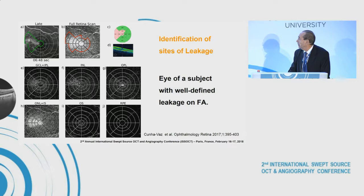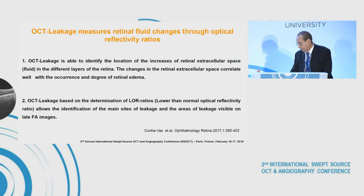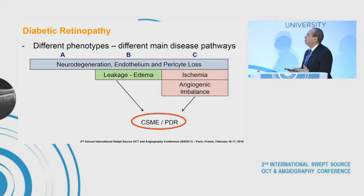OCT leakage therefore measures increases in retinal extracellular space in the different layers of the retina. It can quantify the amount of fluid and compare well with good specificity and very good sensitivity with fluorescein angiography. We always felt that, as Professor Ramin Tadayoni showed, there is some degree of neurodegeneration and cell loss in the retina due to diabetes.